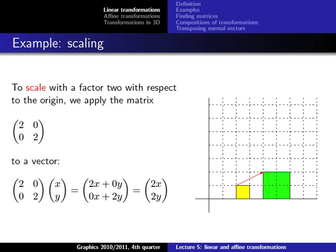If this is our vector and we multiply the x and y components with 2, we get a vector which is twice as long — scaled by a factor of 2. We can do this with all the vectors that represent an object, and then we get an object scaled by a factor of 2 with respect to the origin. This is a simple method to transform, manipulate, and scale vectors.